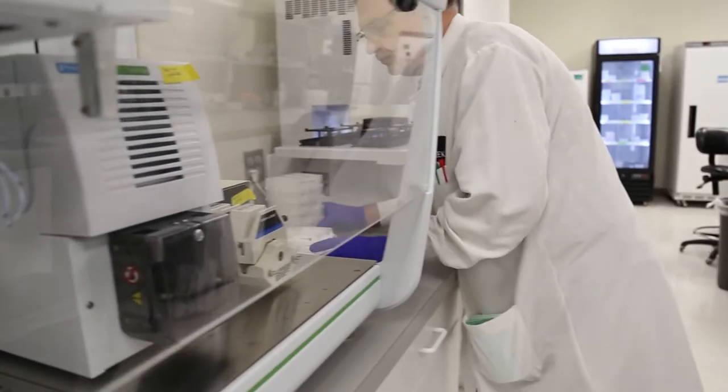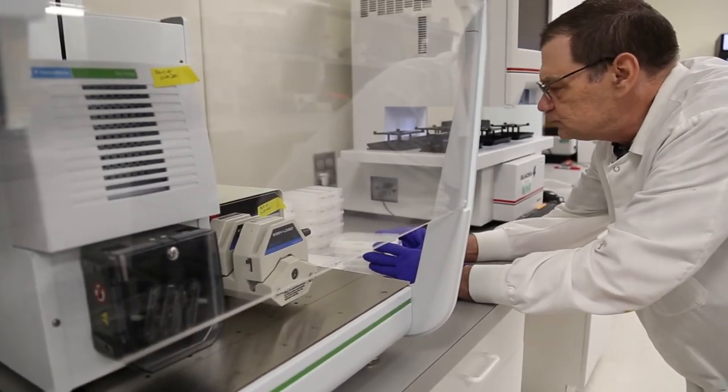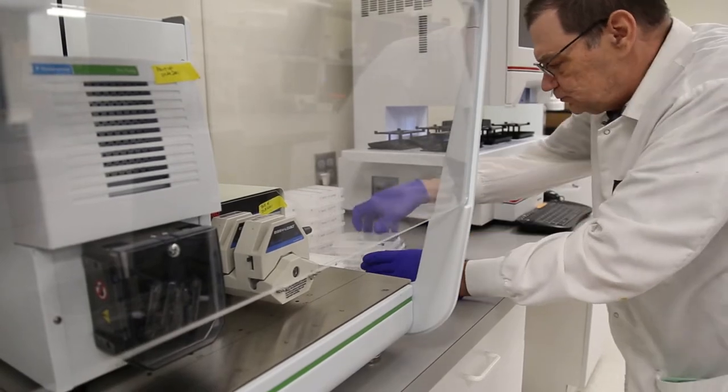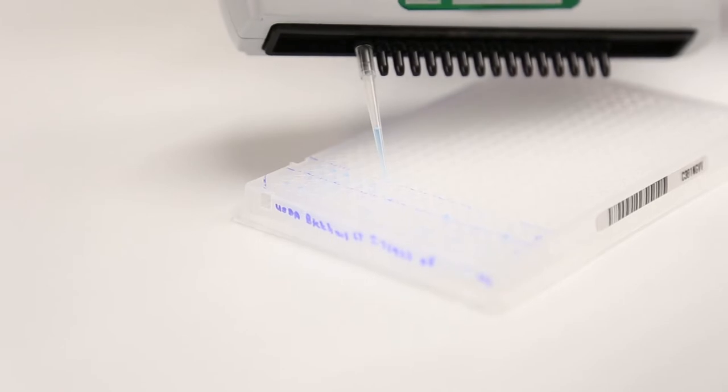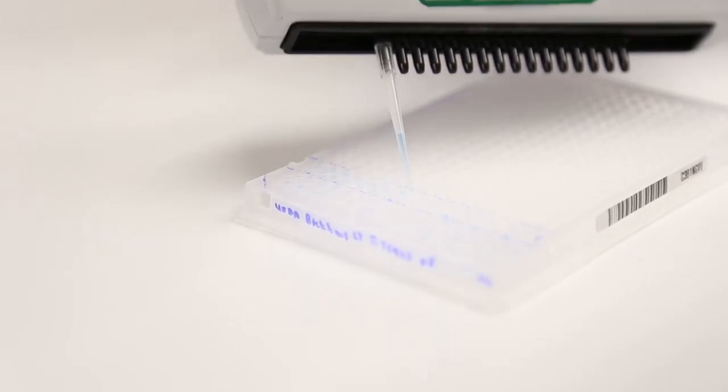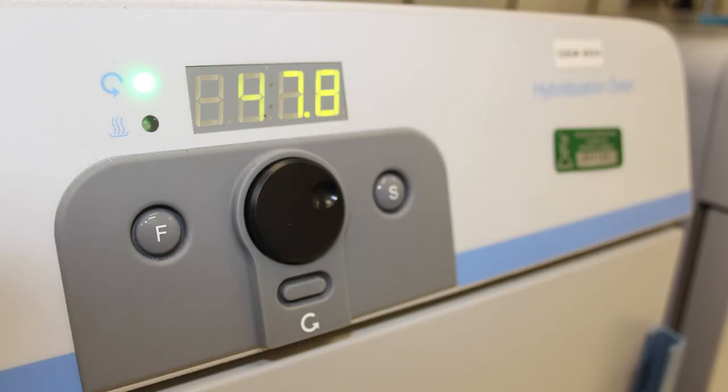The final lab steps are setting up the samples to run on advanced instruments that detect specific DNA markers and read targeted sequences of genetic code. First, we take the minute quantity of DNA obtained through DNA extraction and amplify it. This amplification process makes thousands of copies of the DNA.